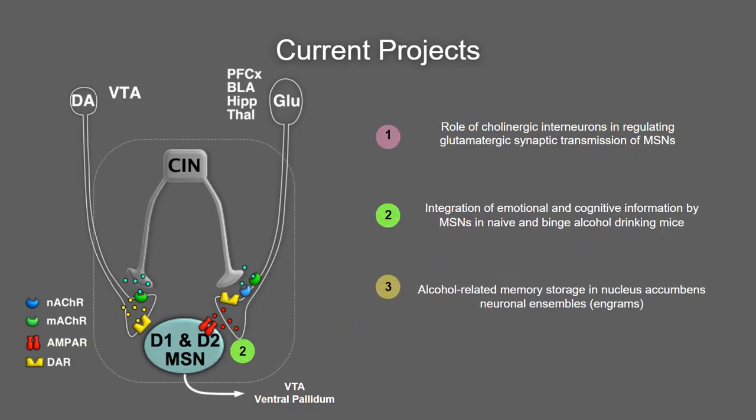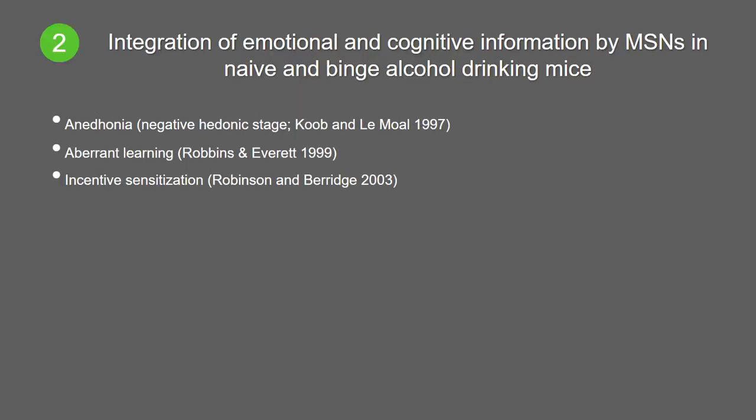The second project is titled: the integration of emotional and cognitive information by MSNs in naive and binge alcohol drinking mice. Over the past 20 to 30 years, a number of theories have been proposed to explain addiction, addressing different aspects such as withdrawal, dependence, and stress. The main theories include anhedonia, aberrant learning, and incentive sensitization. The one that struck my interest is called decision making and loss of inhibitory control, proposed by Antoine Becker in 2005 — not a new theory, but one that has not really been tested at the cellular level.